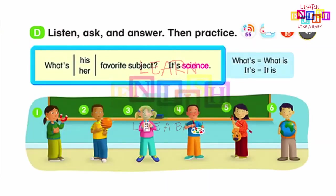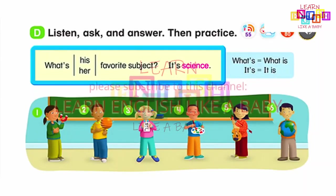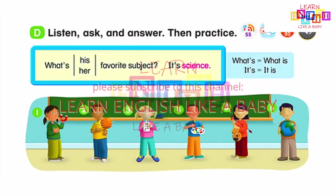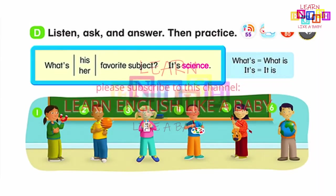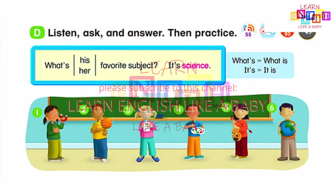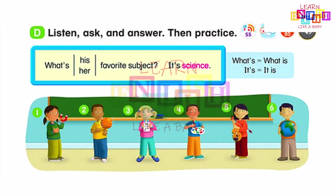Page 73, D: Listen, ask, and answer, then practice. What's his favorite subject? It's science. What's her favorite subject? It's science. What's equals what is. It's equals it is.